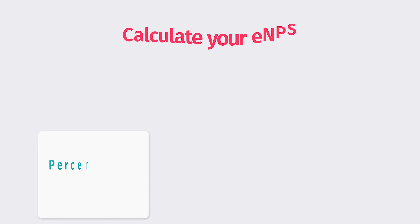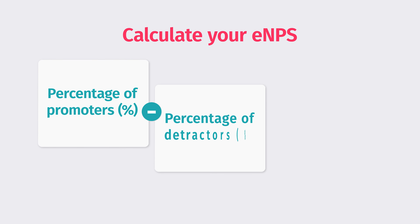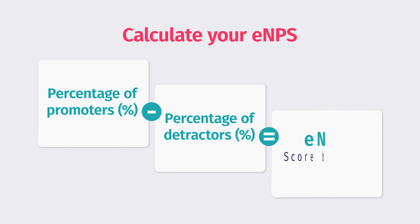Once you have all the individual scores from team members, you can calculate your eNPS for your entire organization. To get your eNPS, you're going to subtract the percentage of detractors from the percentage of promoters. That will give you a score between negative 100 and positive 100.